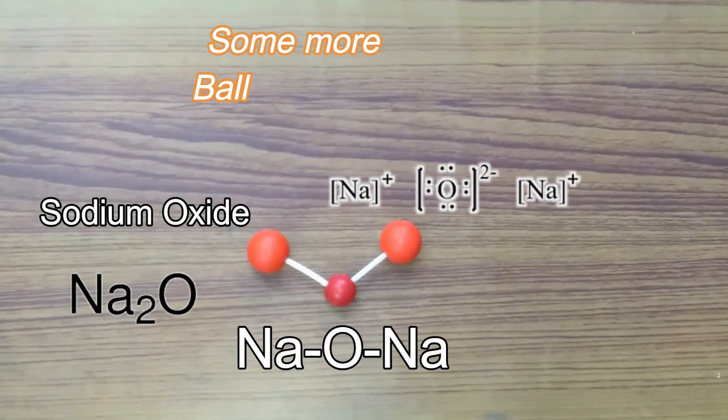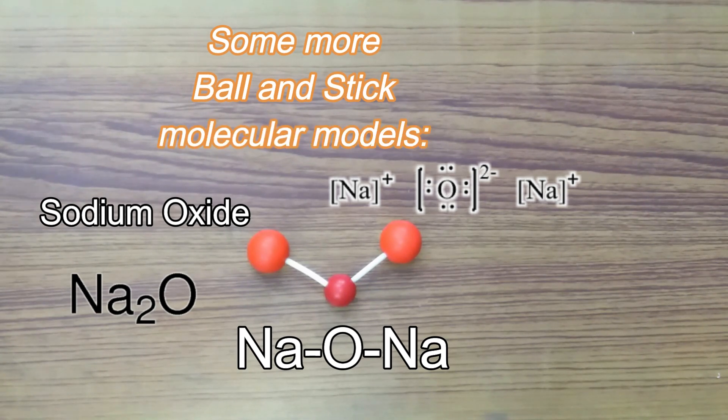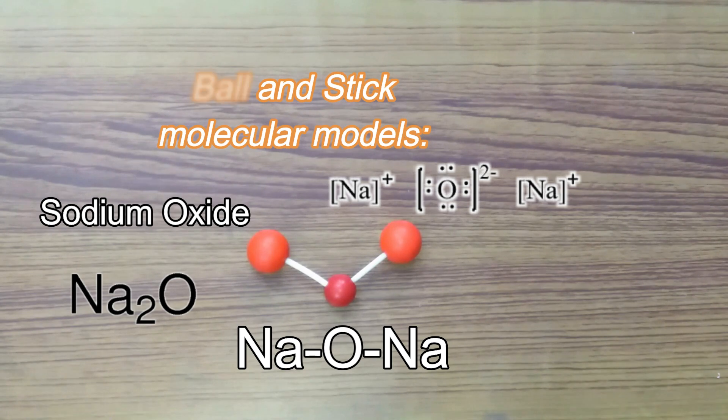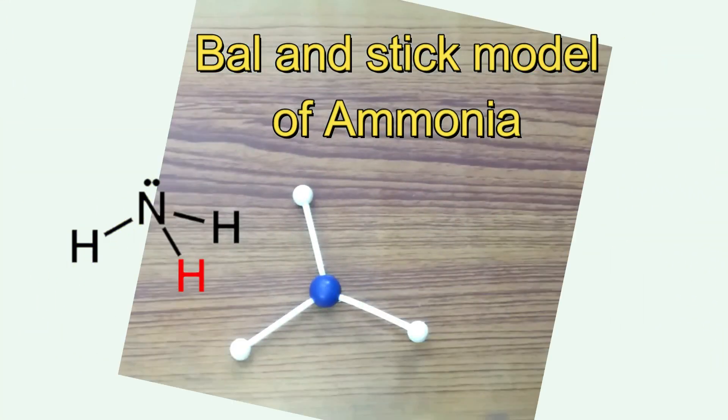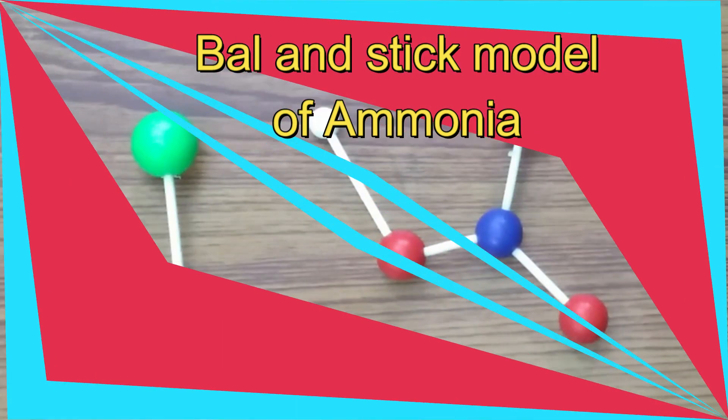This is the structure of sodium oxide molecule where two sodium atoms combined with one oxygen atom forming Na2O. This is the ball and stick model of ammonia or NH3.